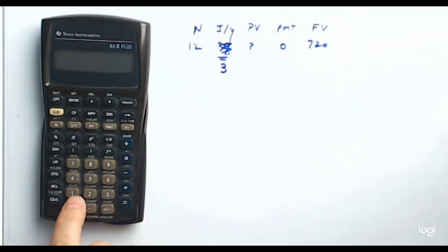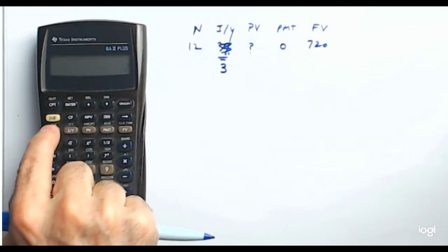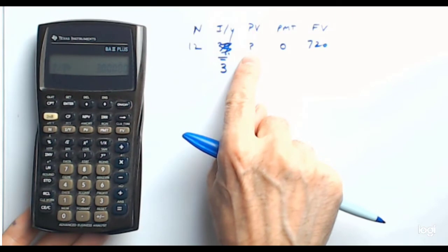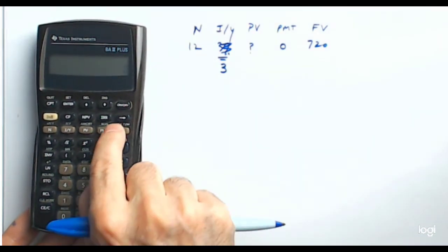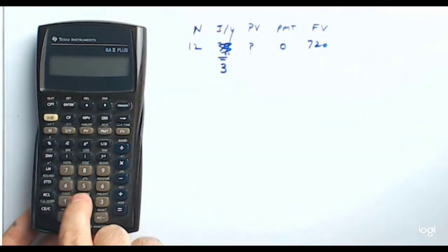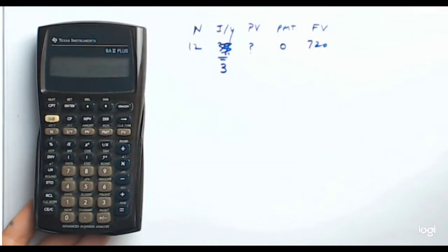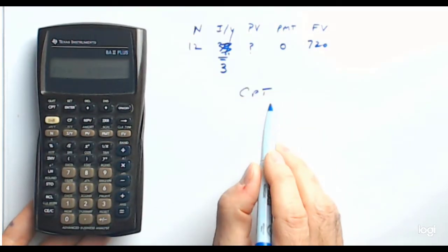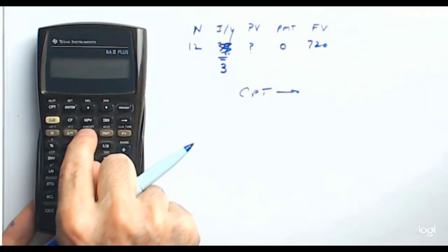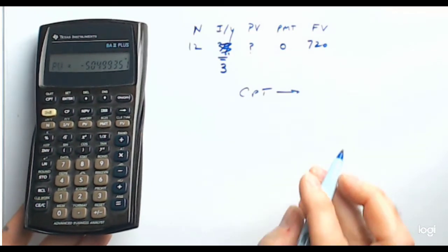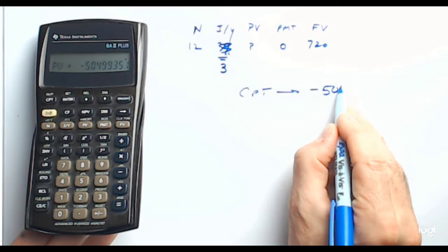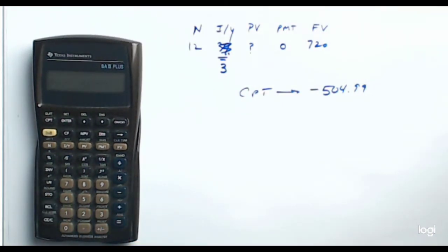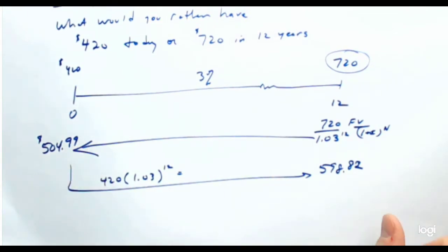With that set, let's input the values: punch in 12, then N; then 3, then I/Y; skip present value for now; put payment to zero; then hit 720, FV. Hit compute — the CPT button — then present value. And out pops minus $504.99. It's exactly what I showed you using the formula.